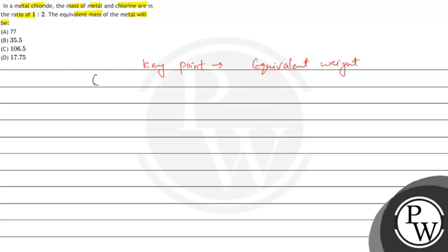Equivalent weight of metal divided by weight of metal is equal to equivalent weight of chlorine divided by weight of chlorine.